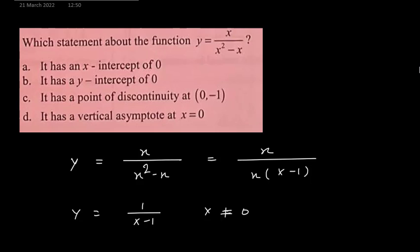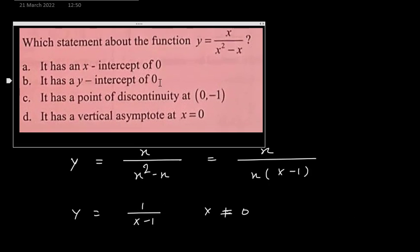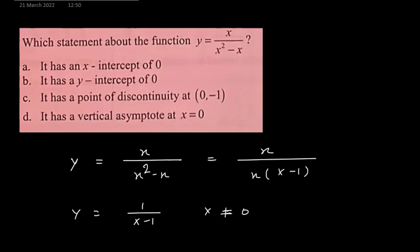When x is not equal to 0, my function y is 1 upon x minus 1. In light of this, it has x intercept of 0 means I cannot take x equal to 0, it is not possible. It has y intercept of 0 means if I take y value 0, I get x value 0, but x cannot be taken as 0. So option a and option b, they are not correct.